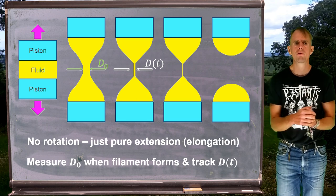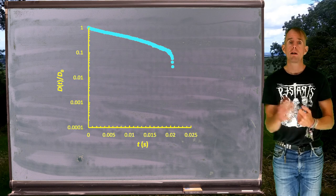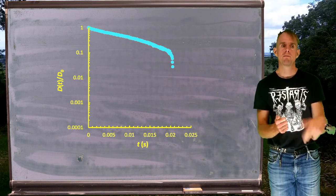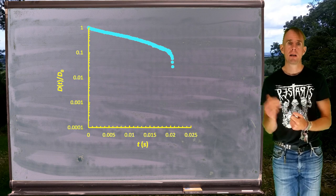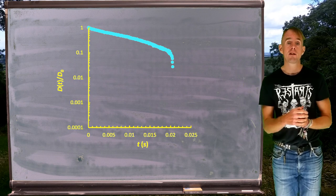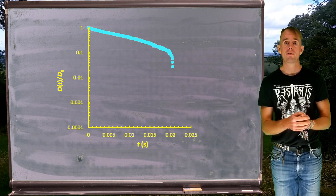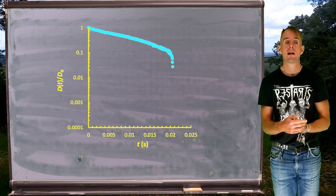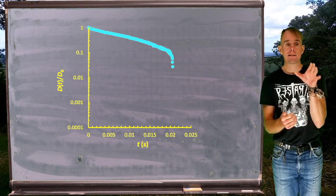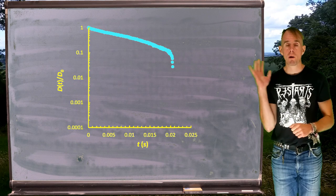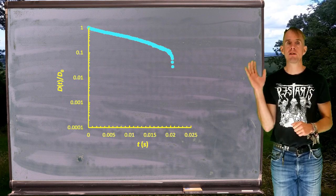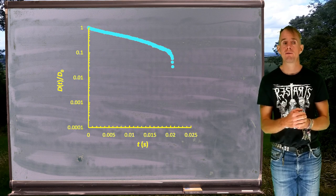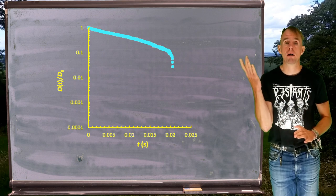So let's look at the sort of data that we get. Here on the board, I have a graph, and what it is plotting is that normalized diameter, d of t over d0, as a function of time. The blue line is the experimental data obtained from a solution of xanthan gum, which is a food gum, it's a polymer, a polyelectrolyte, as a function of time. And what we can see is that once that filament forms, when d over d0 is 1, it decays over the course of about 15 milliseconds to about 0.1 and then suddenly breaks.